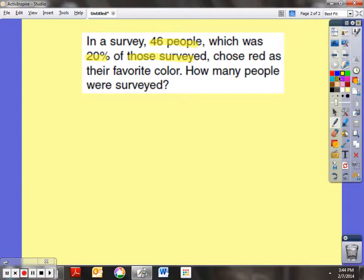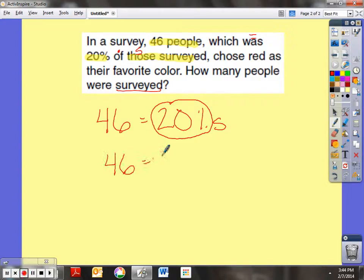46, which equals, which is 20% of those surveyed times those who are surveyed. How many people were surveyed? Oh, this is nice. So you know, 46 people is equal to 20% of the number surveyed. Now, the thing I need to do is get rid of this percent, but I need to find the decimal equivalent of it. So I divide it by 100 or move that decimal two places to the left, and I get 2 tenths times S.